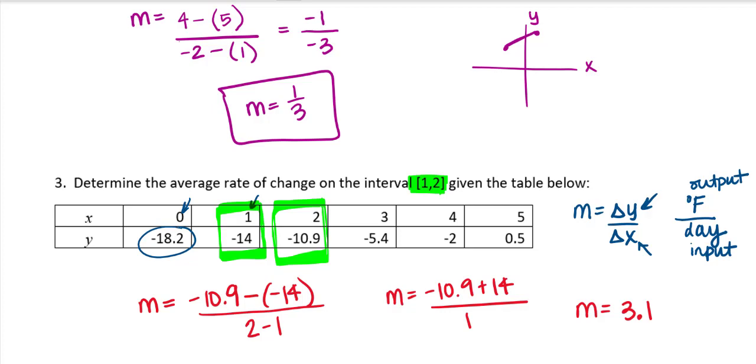So maybe this was degrees Fahrenheit and days. So this means that on average, between day 1 and day 2, just between that interval, I increased 3.1 degrees Fahrenheit per day. Again, just within that interval.